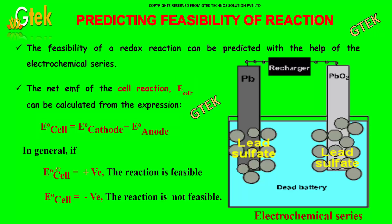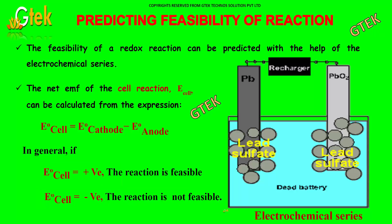In general, if the E0 cell is positive, the reaction is feasible. If E0 cell is negative, then the reaction is not feasible.